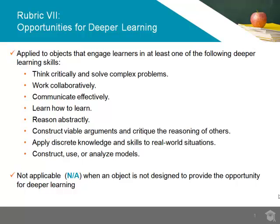Rubric 7 is used to evaluate objects that are designed to provide opportunities for deeper learning and engage learners in any of the following ways: think critically and solve complex problems, work collaboratively, communicate effectively, learn how to learn, reason abstractly, construct viable arguments and critique the reasoning of others, and apply discrete knowledge and skills to real-world situations.